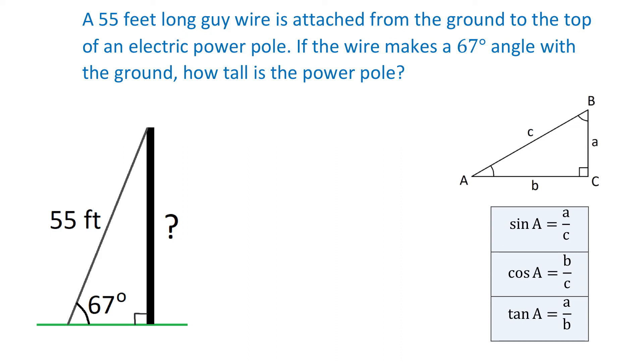In our problem, let's use letter H for the opposite side because it represents the height. Here we have the height, and now let's write that sine of 67 degrees equals the opposite side H divided by the hypotenuse 55.